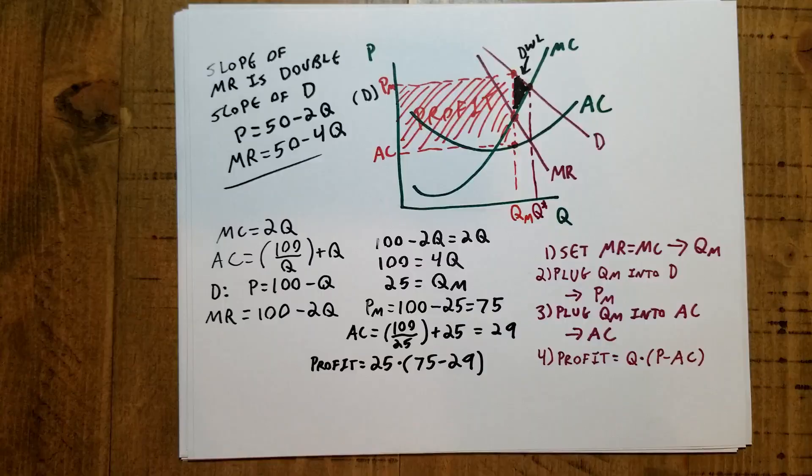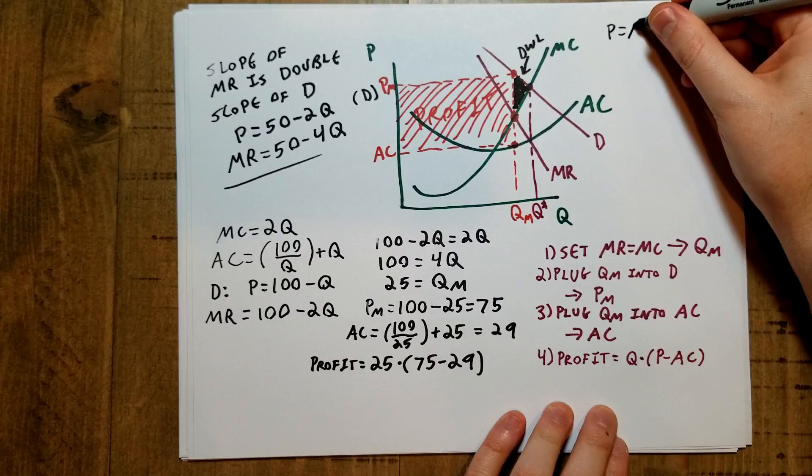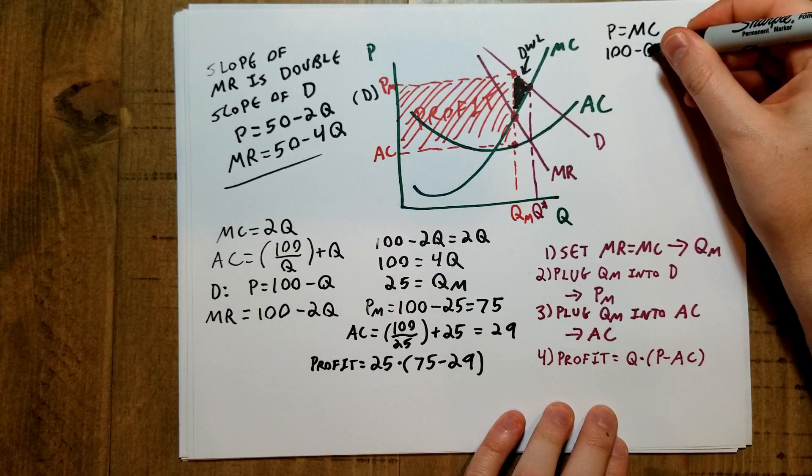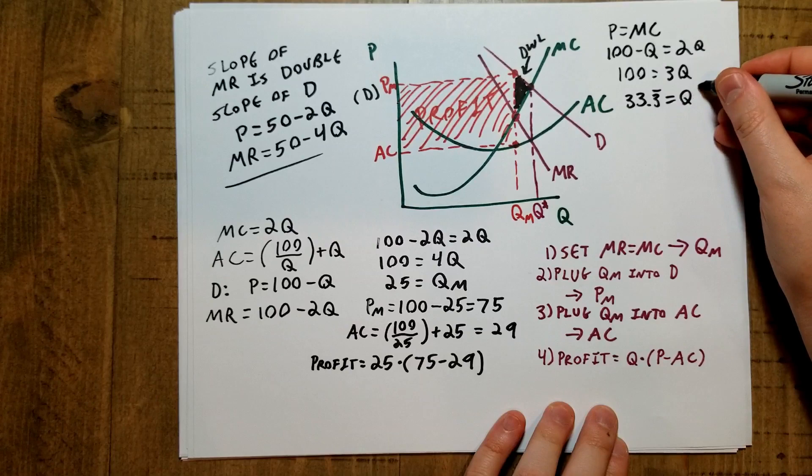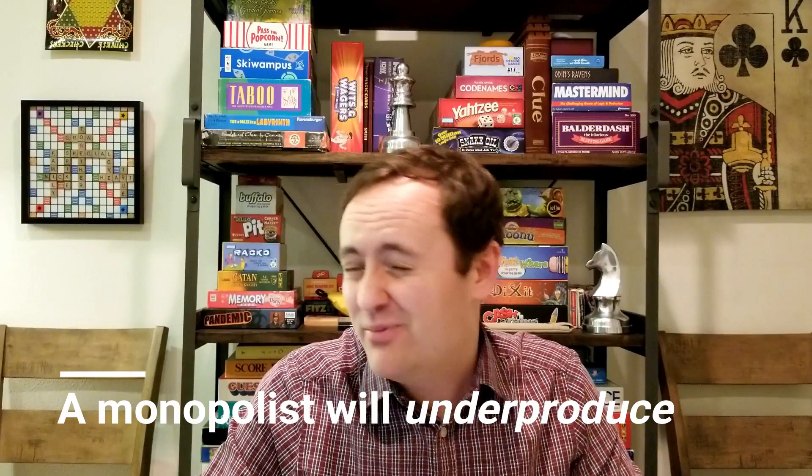The efficient quantity comes from setting price equal to marginal cost. In our example: 100 - Q = 2Q, so 100 = 3Q, giving Q* ≈ 33.3. But the monopoly's profit-maximizing quantity is only 25 — that's over eight units that should be produced for efficiency but aren't. This is a standard result: the monopoly will produce quantities that are too low and prices that are too high compared to the efficient output of the market. All those nice things we said about competitive markets producing efficient results start to fall apart as soon as you introduce pricing power into the mix.